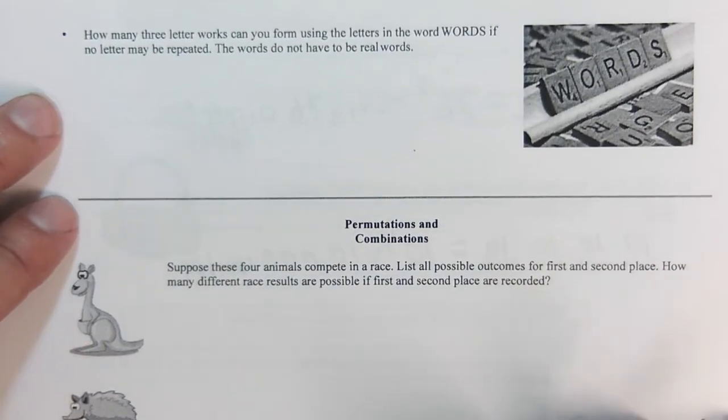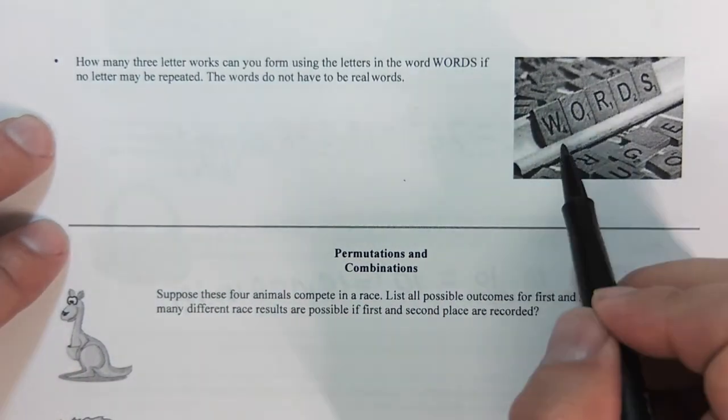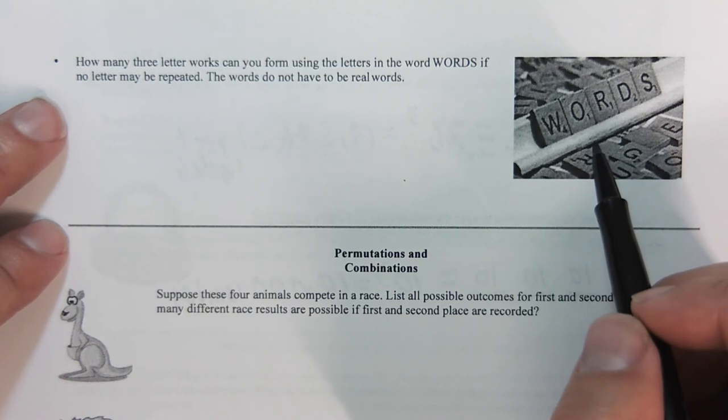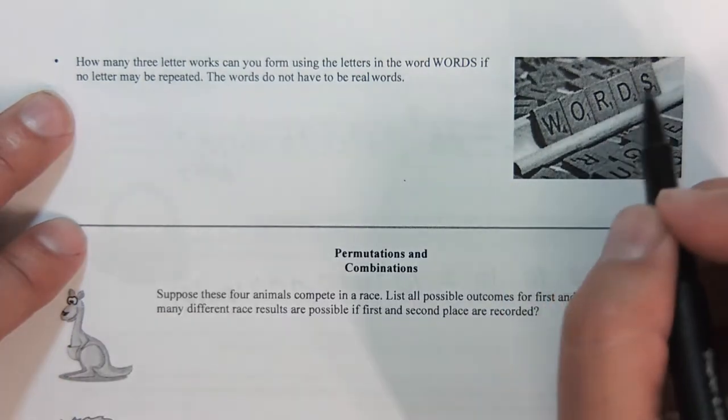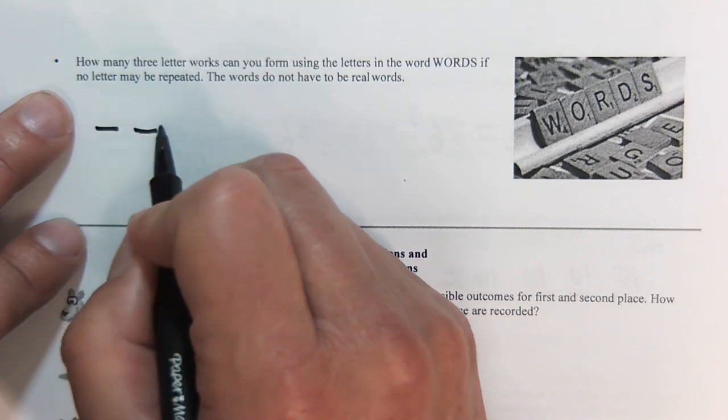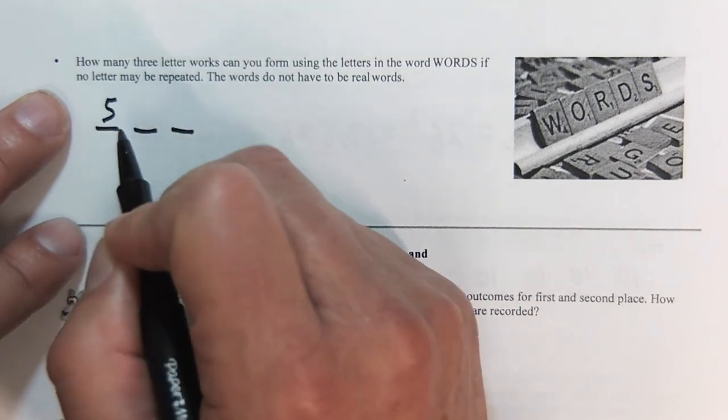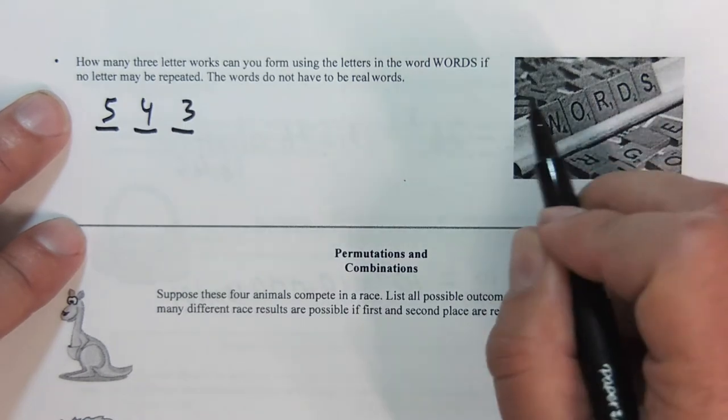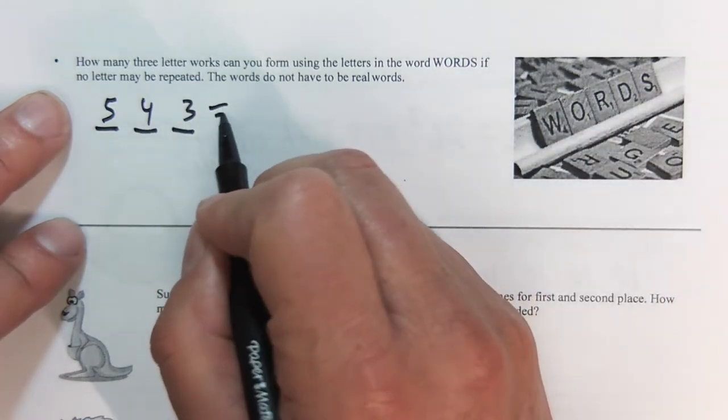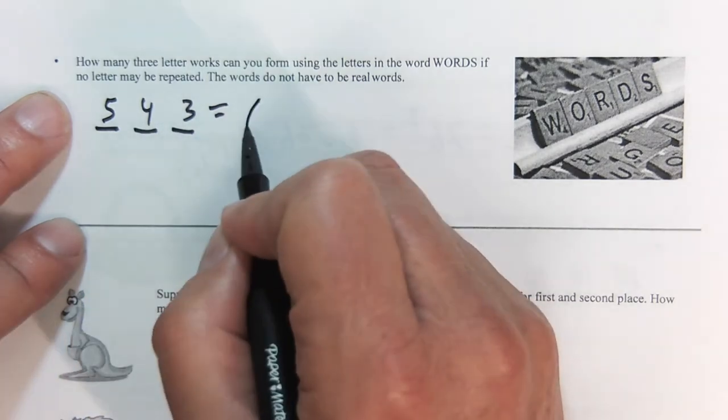A similar one here is how many three-letter words can we make from the word words if they may not be repeated. They don't have to be real words. This is just reordering the letters here. That's going to be start with 5, then 4, then 3, because there are 5 to start out with. Once you pick one, then there's only 4 left, and so on. So 20 times 3 is 60.